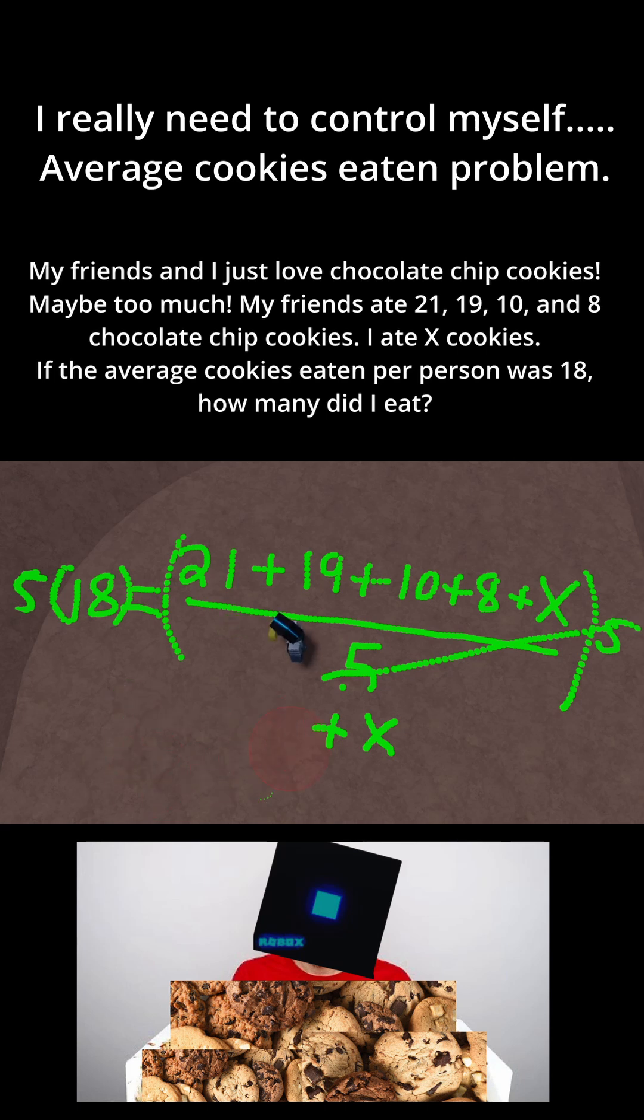And if you do that, you should get that x is equal to 32. So in other words, I ate 32 chocolate chip cookies. Okay, maybe that's a bit too much for one day.